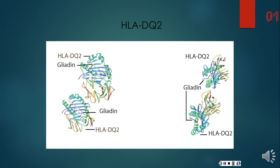These attach to the gluten peptides outside the cell and cause an immune response responding to a segment of protein called gliadin. Celiac disease is a result from this response, as the response causes damage and inflammation to the body's organs and tissues, and also leads to other symptoms of CD.